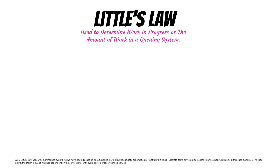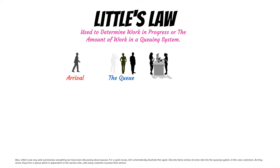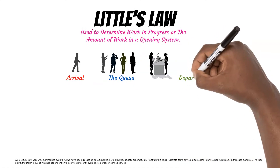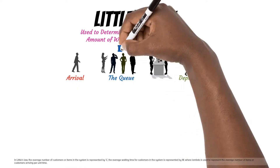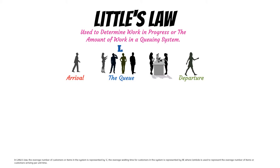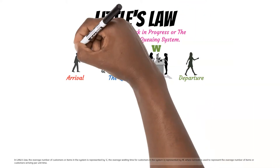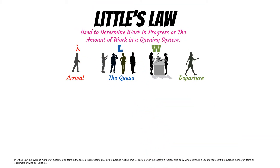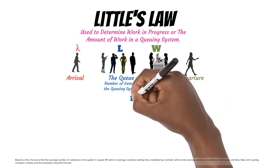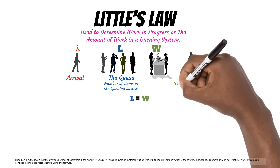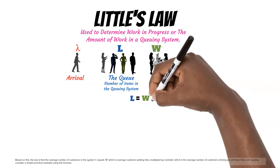For a quick recap, let's schematically illustrate this again. Discrete items arrive at some rate into the queuing system — in this case, customers. As they arrive, they form a queue dependent on the service rate until every customer receives their service. In Little's Law, L represents the average number of customers or items in the system, W represents the average waiting time for customers in the system, and Lambda represents the average number of items or customers arriving per unit time. The law states that L equals W multiplied by Lambda.